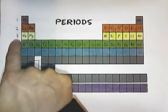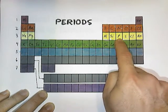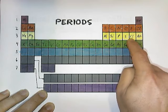Period three contains sodium, magnesium, aluminum, silicon, phosphorus, sulfur, chlorine, and argon.